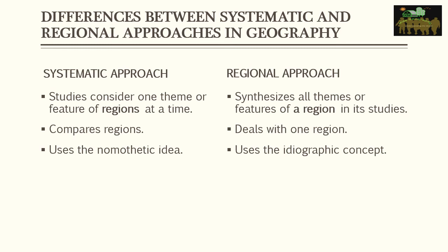The systematic approach uses the nomothetic concept, while the regional approach uses the ideographic concept. The nomothetic approach looks for similarities between things, people, and places — it seeks out general patterns. The ideographic approach, on the other hand, focuses on individual and unique aspects. So the regional approach uses ideographic thinking to examine the unique things of a particular region, while the systematic approach looks at what is general and common across every region.